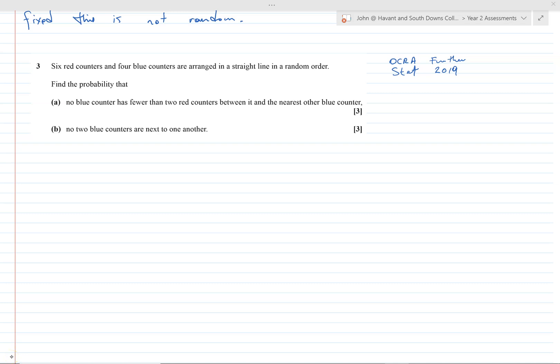Hello, this is question 3 of OCR's Further Stats paper 2019. I always wonder why they put permutations, combinations, and these types of probability questions lumped in with stats. I mean, of course probability is connected to stats, but this question is not really directly anything to do with statistics. This is where OCR put this part.